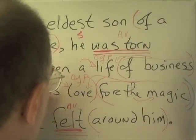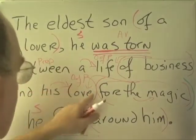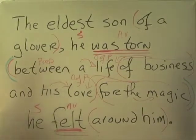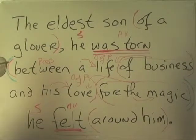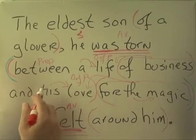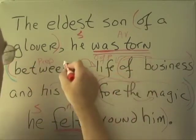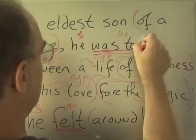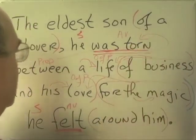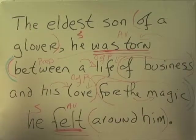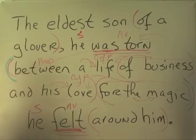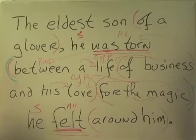The question is what 'between a life of business and his love for the magic, et cetera' modifies. I think that's adverbial, describing the whole verb — modifying the verb. How was he torn? Why was he torn? Between a life of business and his love for the magic he felt around him.